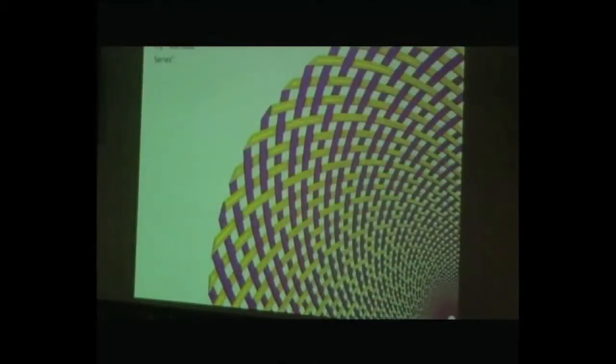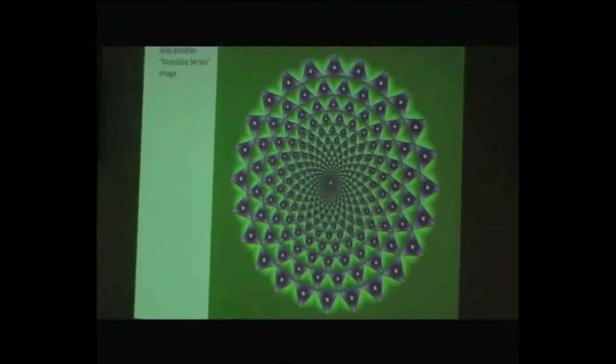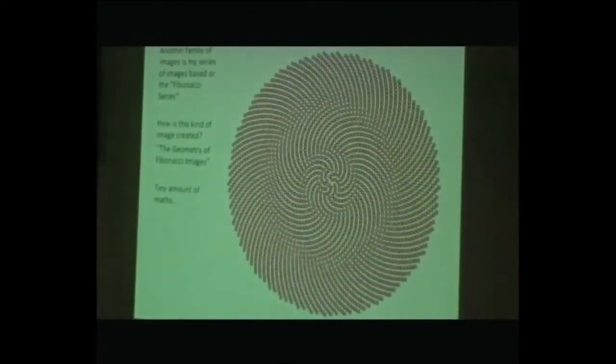I started to explore various different families of ways of using form and color. This is from a subdivision series where I was dividing up recursively. I used recursive code to divide up the square, the plane. That's another one, possibly a more familiar kind of shape, the golden mean of course. This is from another family, my mandala series. This is another one from another family, Fibonacci.